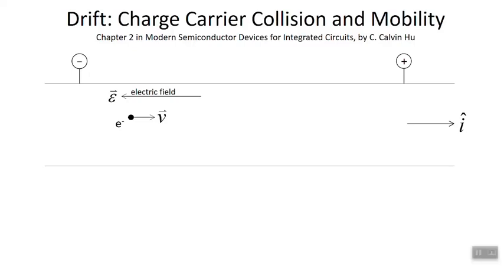We will start covering chapter 2 in the textbook by Calvin Hu, which deals with the motion of charge carriers inside of a semiconductor. The reason this needs to be covered is so that we can model current density and electron and hole movement.